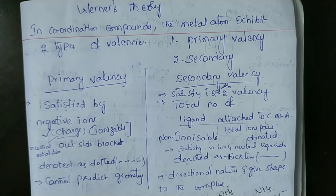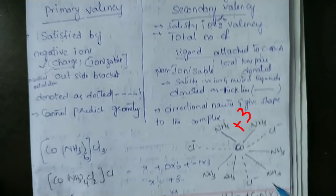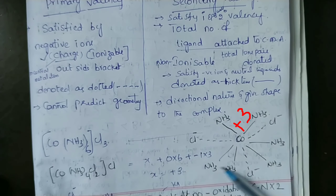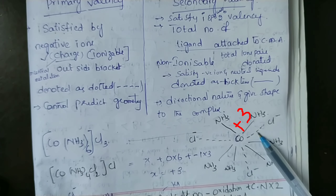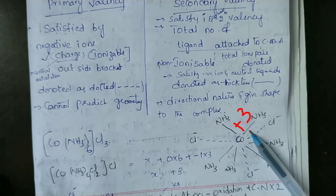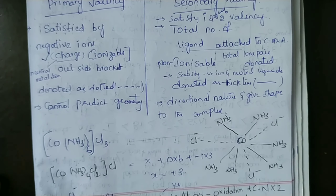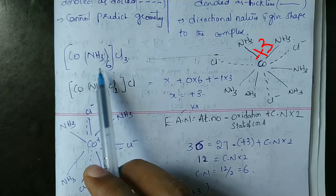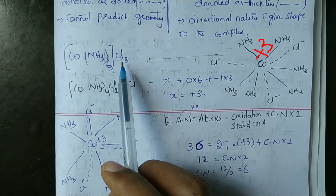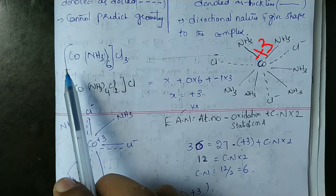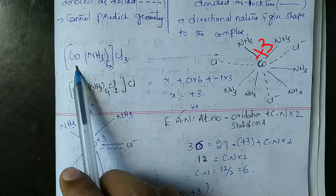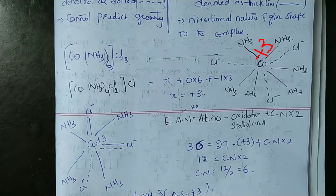Werner's Theory: In a coordination compound, the metal atom exhibits two types of valencies — primary valency and secondary valency. For example, in Co(NH3)6Cl3, the metal atom cobalt exhibits these two types of valencies: primary valency and secondary valency.